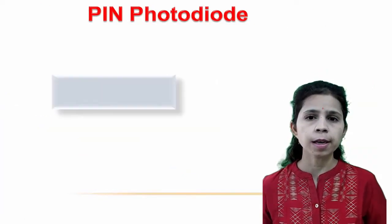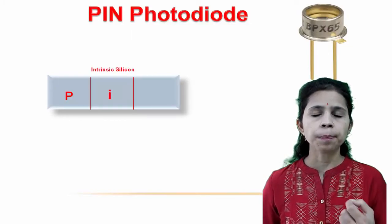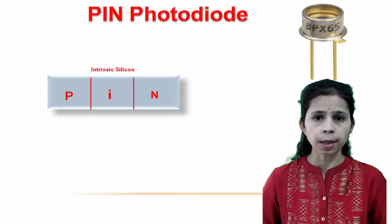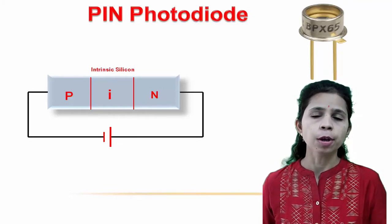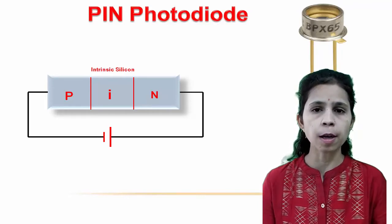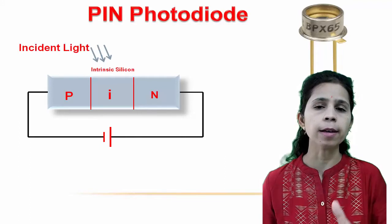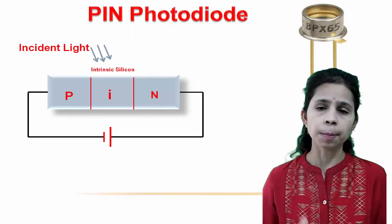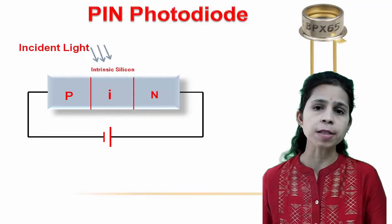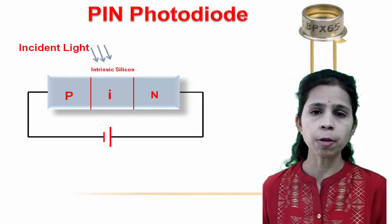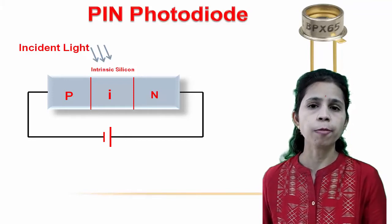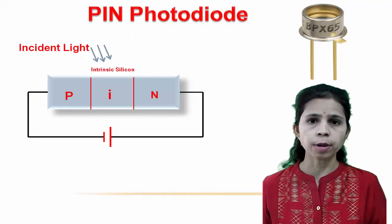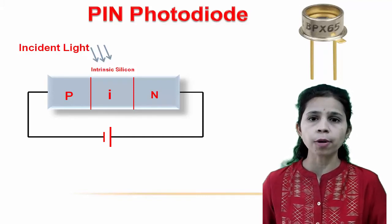The PIN photodiode is a three-region reverse biased junction diode where an intrinsic silicon layer (I) is sandwiched between heavily doped P and N type semiconducting material. This design means carriers generated by light photons in the middle of the layer have less distance to travel than if generated at one side, making the PIN photodiode extremely faster than a normal PN junction photodiode. The relatively thick intrinsic layer, about 2.5 micrometers, ensures that almost all incident light is absorbed.